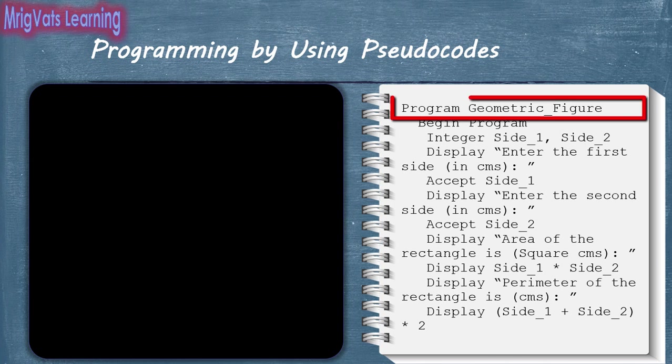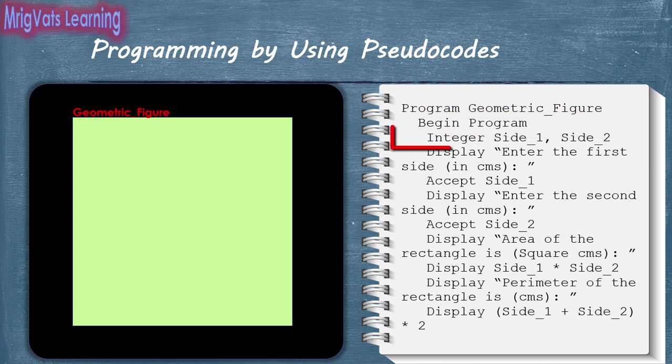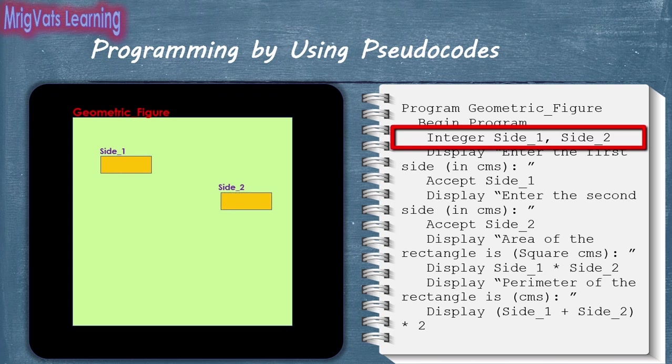As soon as you run the Geometric Figure program, the computer reserves a memory block for the program, which is enclosed between the Begin Program and End Program statements. With the integer statement, the program declares and creates two variables Side1 and Side2 of integer type at random locations within the memory block. These memory chunks are used to store values of the two sides accepted from the user. Notice that only two variables are used in the program, and results of the calculations are displayed when needed.